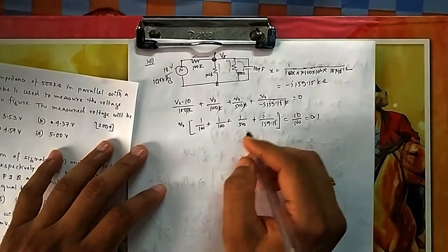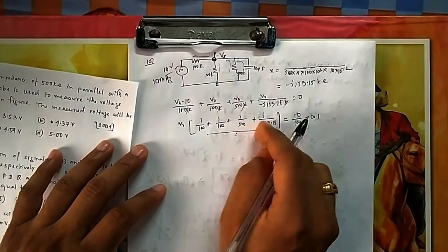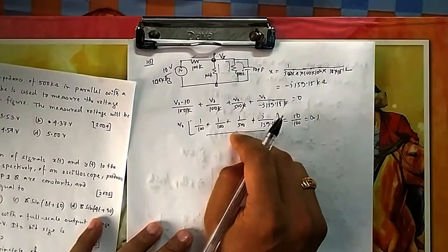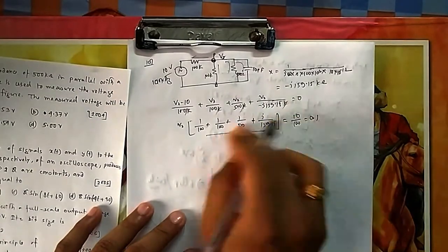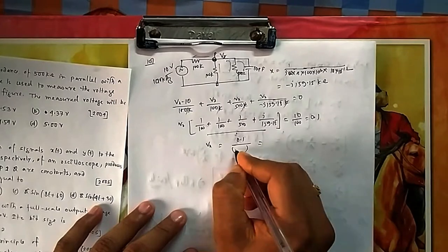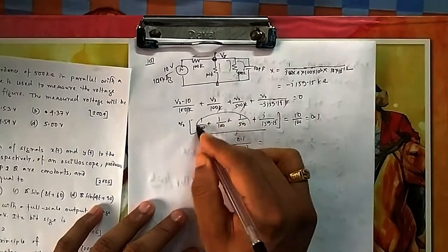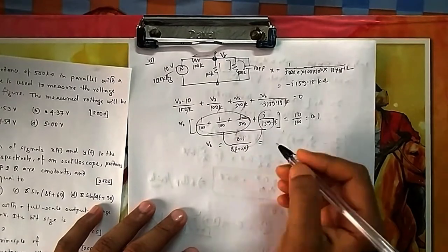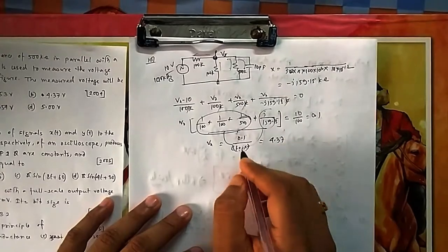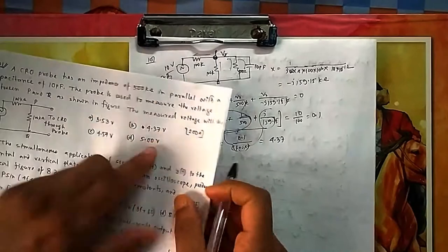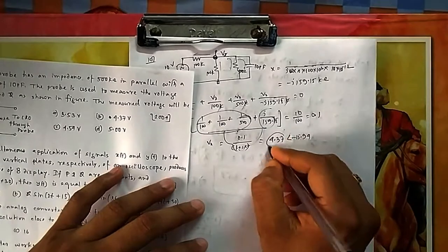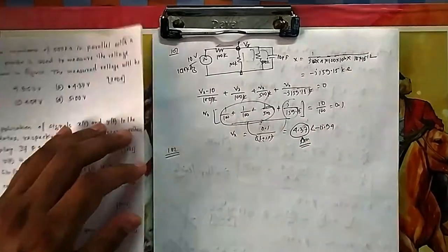The right-hand side equals 0.1. When solving complex numbers, note that direct polar-to-rectangular conversion may not be available on a computer-based calculator. Separate real and imaginary parts and find the magnitude by dividing. The resulting magnitude of Vx is 4.37 volts — this is the voltage measured by the probe. Angle calculation is not required here.